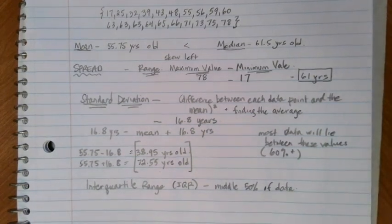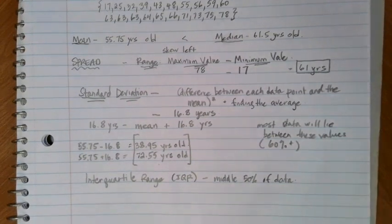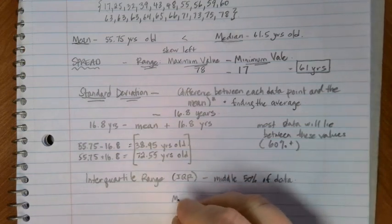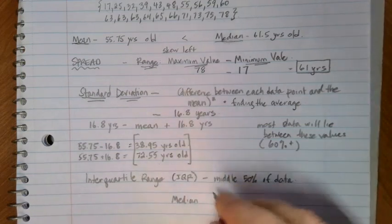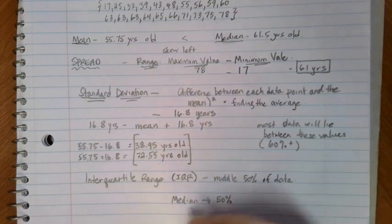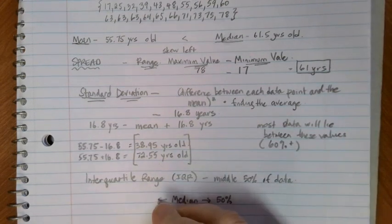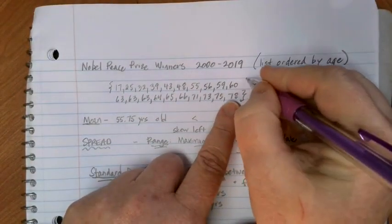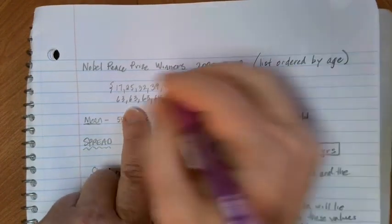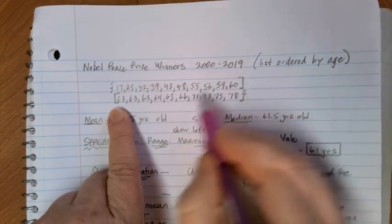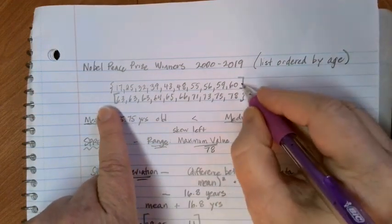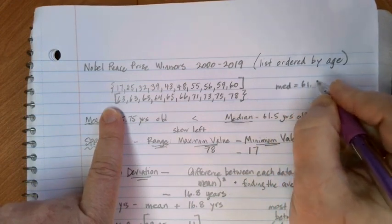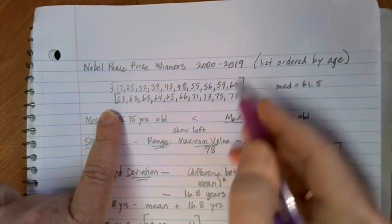What the interquartile range is, is it's a way to look at the middle 50% of the data. How we get the interquartile range goes back to kind of thinking about our median. When we talked about the median, the median was the value where there were going to be 50% of the data points above, at or above that value, and 50% of the data points at or below that value. So up here, our median fell in between 60 and 63, because there were 10 data points above that value and 10 data points below that value. And we just find the average of that. So in this case, our median was that 61.5 years old.